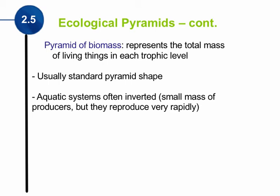The reason the aquatic biomass pyramid is inverted is that the producers reproduce so rapidly. The algae or phytoplankton can grow and reproduce very, very quickly.